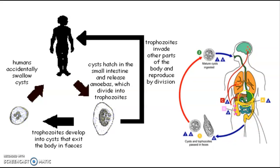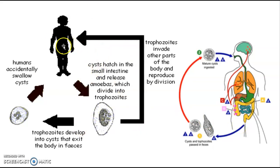If trophozoites are released into the environment, they are destroyed immediately. But cysts are very hardy — they survive in the environment and cause infection in other persons. The cycle continues: humans accidentally swallow the cyst, which releases trophozoites, and trophozoites again produce cysts.